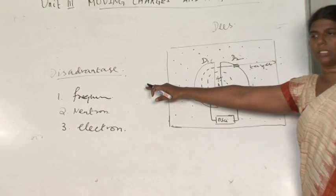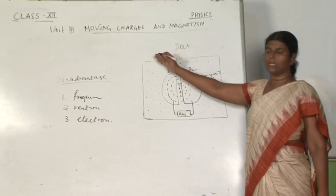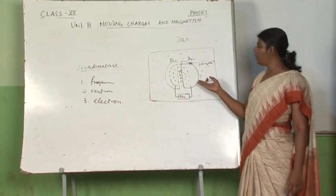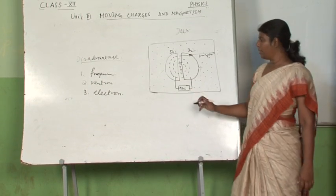The electron mass is very less, and the frequency will not match with the oscillator frequency, so you will not be able to accelerate electrons here.